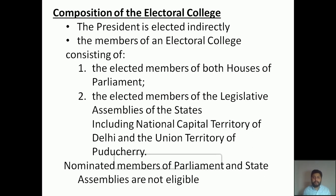Who are the nominated members? As discussed when studying the Union Parliament, two people can be nominated by the President to Lok Sabha, and twelve people can be nominated to Rajya Sabha. These nominated members are experts in particular fields such as Literature, Science, and Sports. Those nominated members are not eligible to cast their vote in the election of the President.